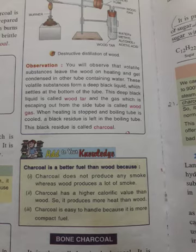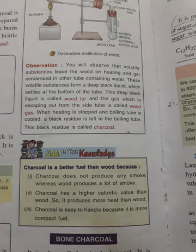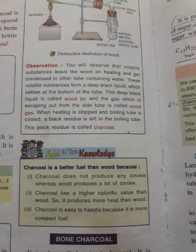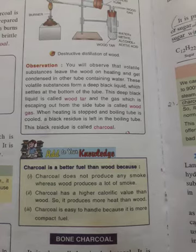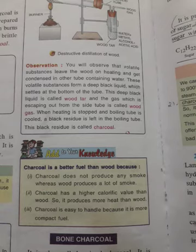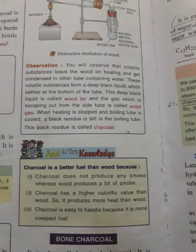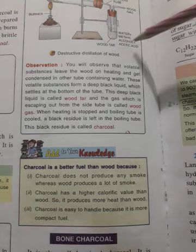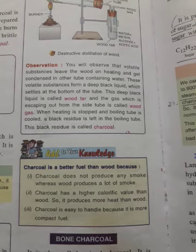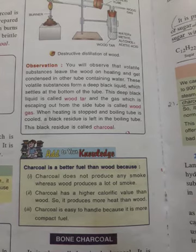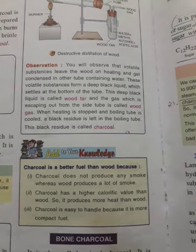What is destructive distillation? Strong heating of wood in the absence of air is called destructive distillation of wood. The main products formed during destructive distillation of wood are: wood charcoal, which is left in the test tube as a residue; wood tar; pyroligneous acid, which is a mixture of water, methyl alcohol, and acetic acid; and wood gas.